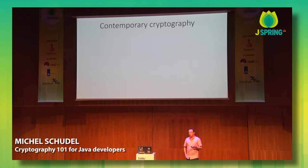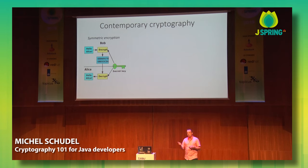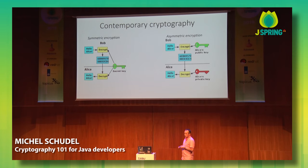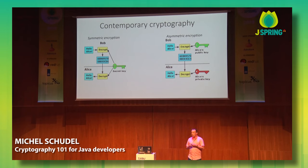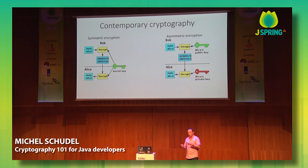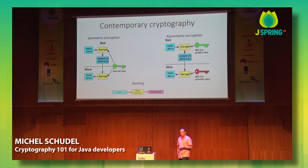What does contemporary or modern cryptography look like? It basically consists of three parts. The first part is symmetric encryption, where Bob sends a message to Alice and uses a key to encrypt the message, and Alice uses the same key to decrypt it. The second is asymmetric encryption, where you have a key pair — Bob can use the public key to encrypt the message and Alice can use her private key to decrypt it, so anyone can send Alice a message that only she can decipher. The third part is hashing.